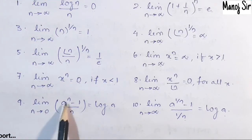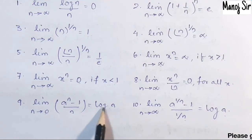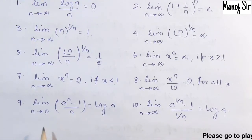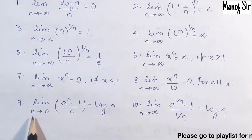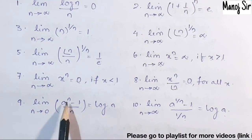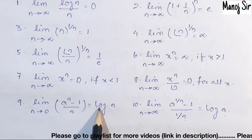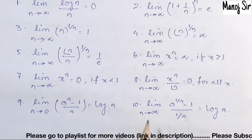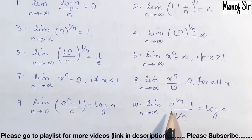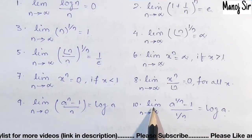Ninth standard limit: limit n tends to 0 of (a^n - 1) / n is always log(a). I repeat — limit n tends to 0 of (a^n - 1) / n is always log(a).